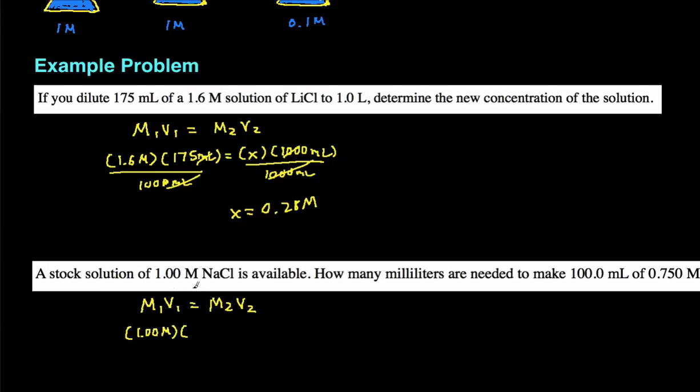The original volume, we're actually solving for that because this is how many milliliters of that 1.00 molar NaCl is needed. So that's our unknown V1, just going to call that X.